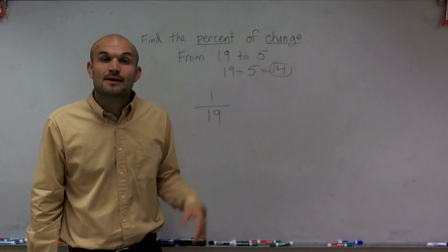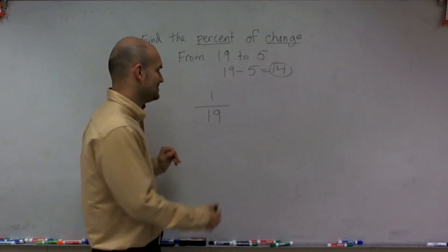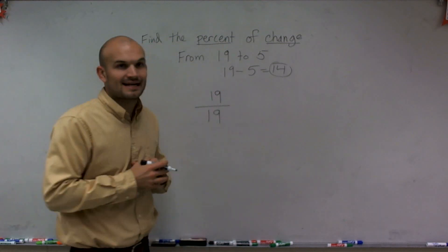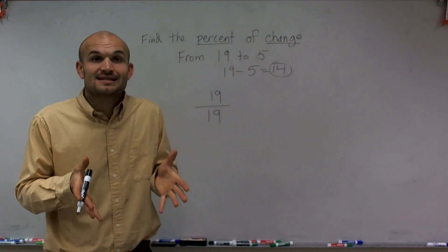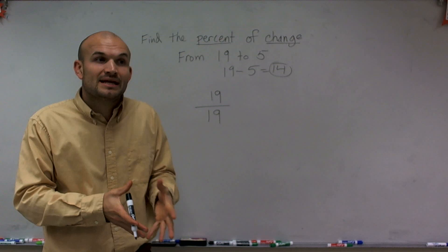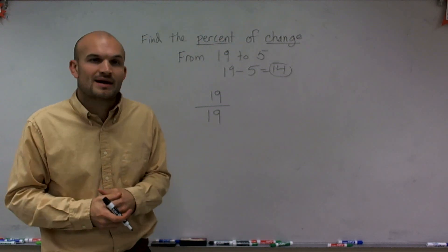If I have 1 over 19, that means I have one stick out of 19. If I have 19 out of 19, that means I have 19 sticks out of a total of 19, meaning I would have a hundred percent of my sticks.